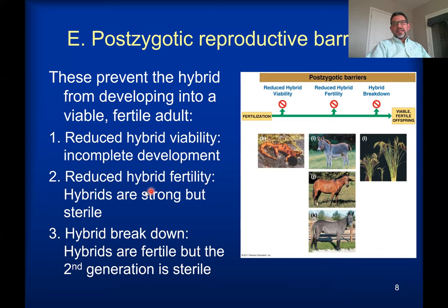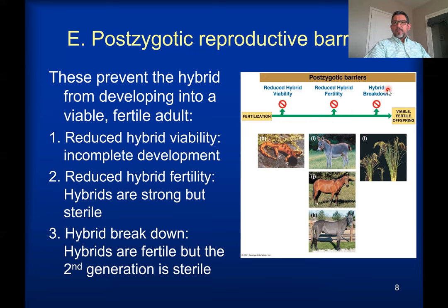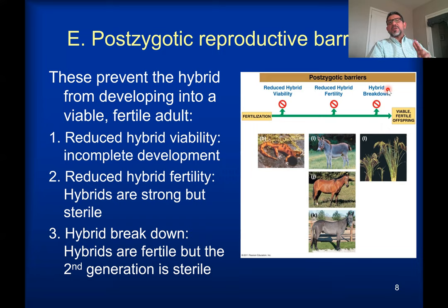Sometimes we have reduced hybrid fertility. Horses and donkeys can produce viable offspring — we have the mule and the hinny as examples of crossings between horses and donkeys — but those offspring are sterile and don't reproduce, so that's the end of the hybrid. Another case is hybrid breakdown, which happens when two different species mate, zygotes develop, and the offspring develops. The first generation may look strong, healthy, and reproduce, but it is the second generation of hybrids that will be weak, feeble, or sterile — and that's the end of the hybrid line.